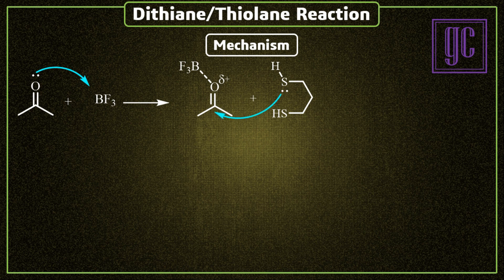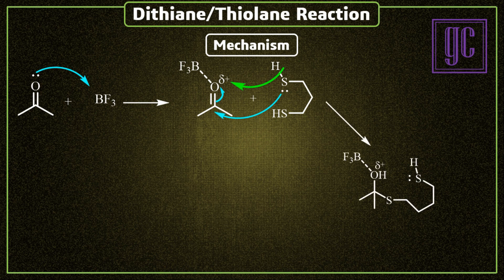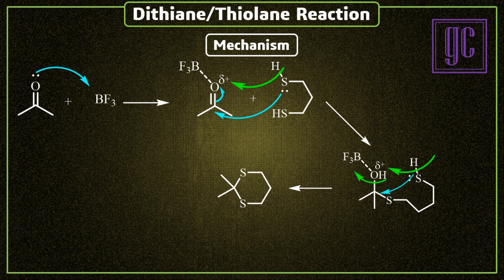Now, the lone pair of the sulfur atom attacks on the carbonyl carbon. As a result, the pi electrons of the carbonyl move to oxygen, and at the same time, one proton shift takes place from sulfur to oxygen. The hydroxyl group is still binding with the Lewis acid; because of that, the partially positive charged hydroxyl group acts as a leaving group and leaves the molecule. At the same time, the thio group attacks on the carbon atom, and one proton is again shifted to the hydroxyl group, and as a final product, 1,3-dithiane is formed.